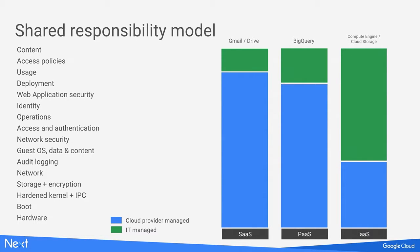This is a high-level diagram of the spectrum of the shared responsibility model across SaaS, PaaS, and infrastructure as a service. As you go from the SaaS environment all the way down to the IaaS environment, the ratio of responsibility changes. When you look at a SaaS model like Gmail or Drive, the customer is responsible for the data and access, but Google has much greater responsibility underneath. But in the IaaS model, you are responsible for the operating system, firewall configuration, and beyond.